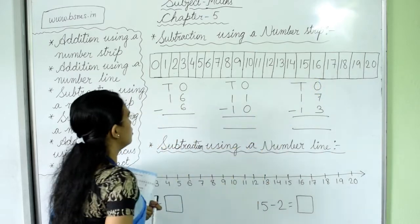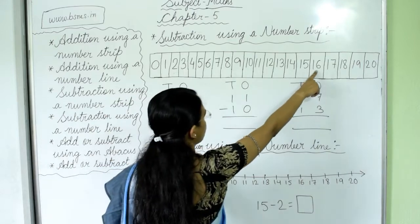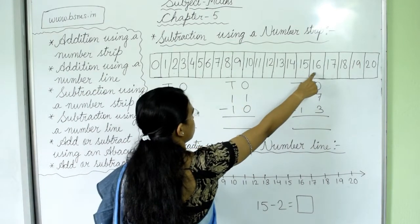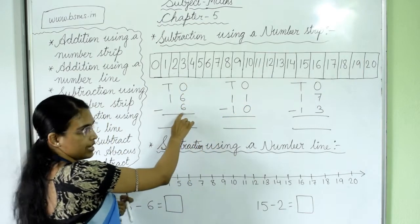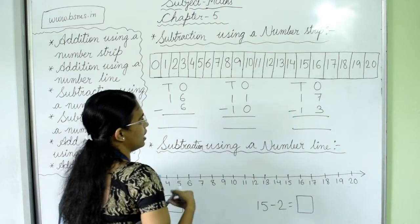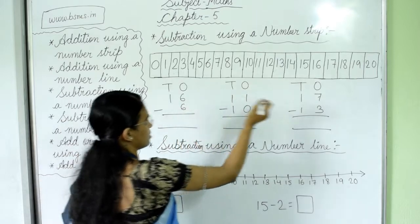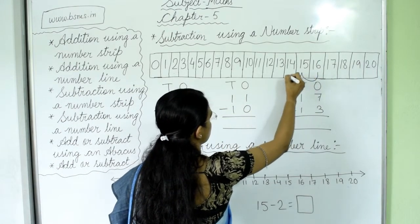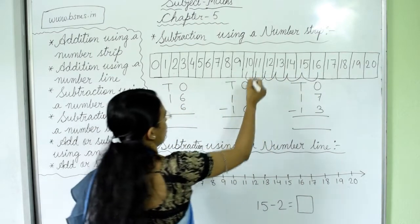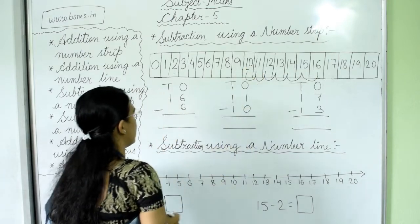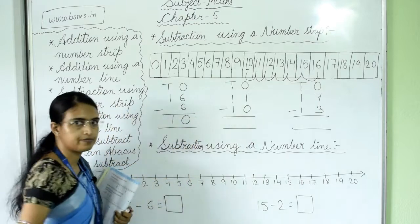From 16, we do not go forward because we are doing subtraction — we go backward. How many back steps? 6. You are standing on 16 and take 6 back steps: 1, 2, 3, 4, 5, 6. Now you are on number 10. So 16 minus 6 equals 10.